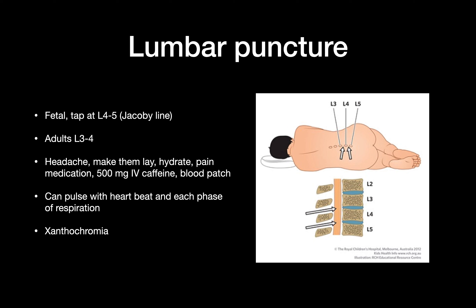For a lumbar puncture in fetuses and babies, you tap at the Jacoby line, which is at L4 to L5. In adults, you tap a little higher around L3 to L4. A common complication is a splitting headache. For that, you make the patient lay supine, hydrate them usually with IV saline, and give them pain medication — generally acetaminophen. You don't want to give aspirin because they might bleed too much.